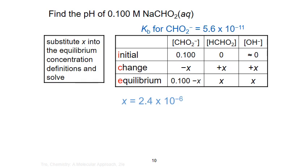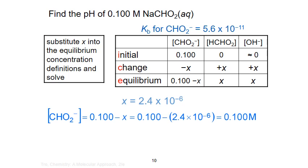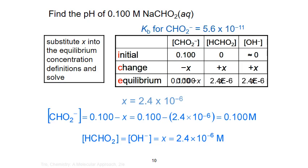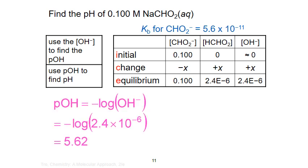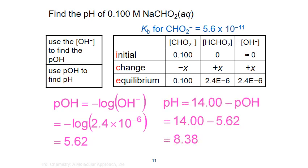We can now use the X that we calculated to determine our actual equilibrium concentrations for each species. For the formate ion, 0.100 − 2.4 × 10⁻⁶ gives us essentially 0.100. The concentration of hydroxide ion and formic acid in the solution are each equal to X, or 2.4 × 10⁻⁶ mol/L. Finally, we use the equilibrium concentration of the hydroxide ion to calculate pOH as 5.62. pH is then 14 − pOH, or 8.38. The pH is greater than 7, as expected for a basic solution.